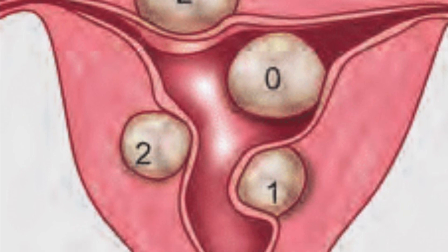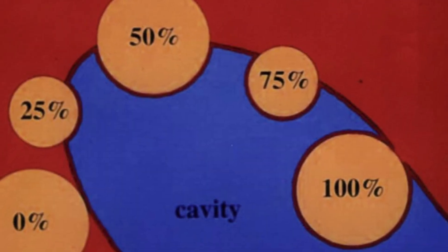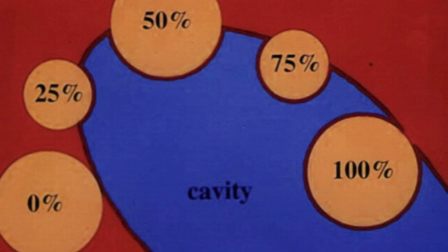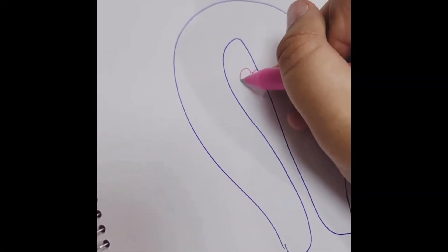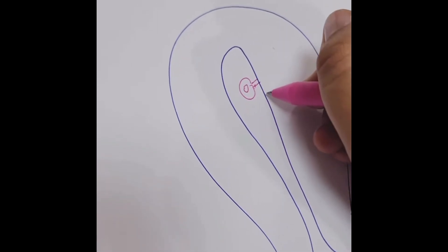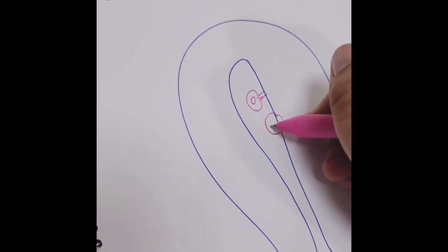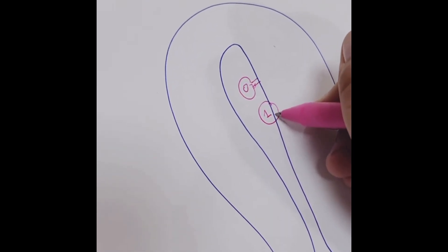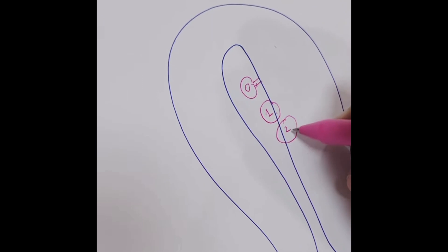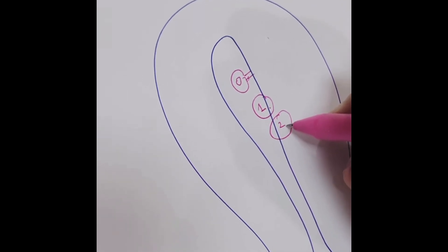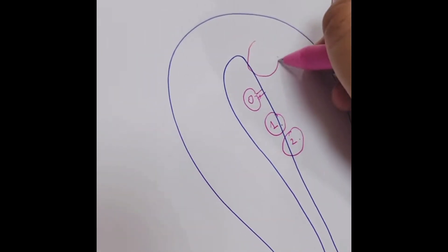Uterine fibroids are classified according to their location within the uterus and their relation to the mucosa or the serosa. When the myoma is attached by a pedicle with all of the myoma bulging into the cavity, it is type zero. When more than 50% of the myoma bulges into the cavity with less intramural part, it is type one. With more deep intramyometrial involvement of more than 50%, it is type two.